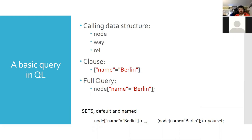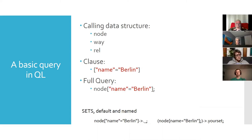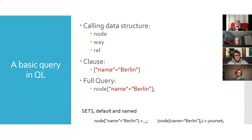It looks like gobbledygook when you first look at it, but going back to our data structures, one thing to know is being able to call that particular data structure. I can say I'm looking for nodes, or I'm looking for a way, or I'm looking for a relation. There is also the shorthand NWR, which says I'm looking for a node, way, and relation all at once. Then you have a clause that filters — this is optional. You can look for all the nodes in a bounding box if you want, but the clause with the key-value pairs is where you get a lot of power in extracting the data you'd like.